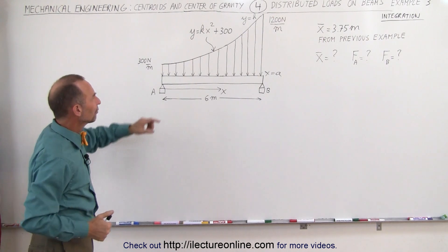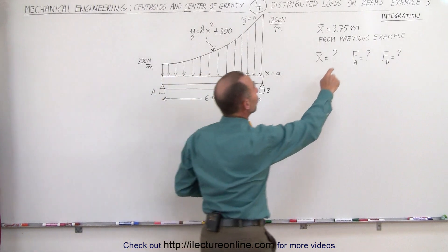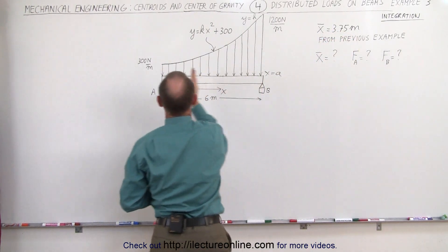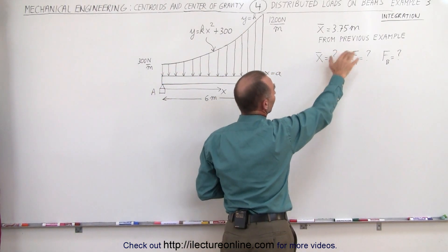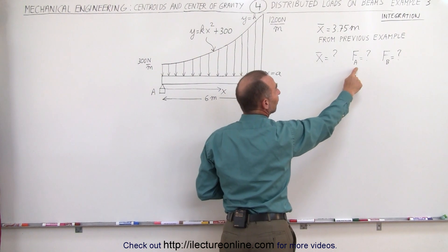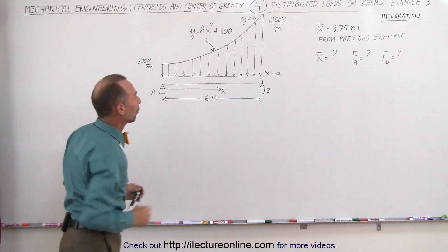The first thing we need to do is find out what k is equal to. Remember the result we got last time was that the x-coordinate of the centroid was at 3.75 meters from point A to the right, and that's from the previous example. So we're going to try to find that value again and then find the force at A and the force at B, the reaction forces at the two support points.